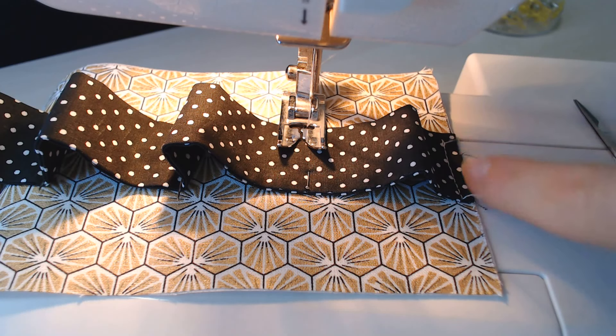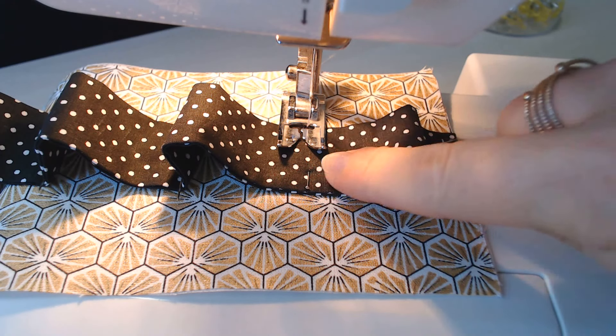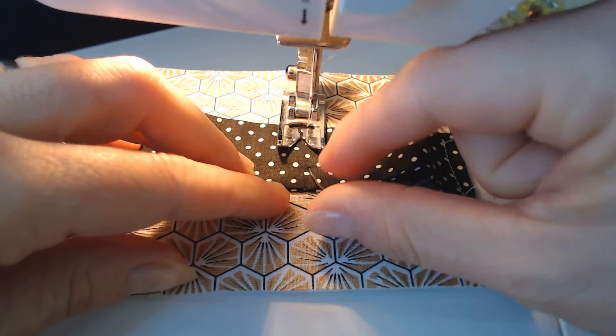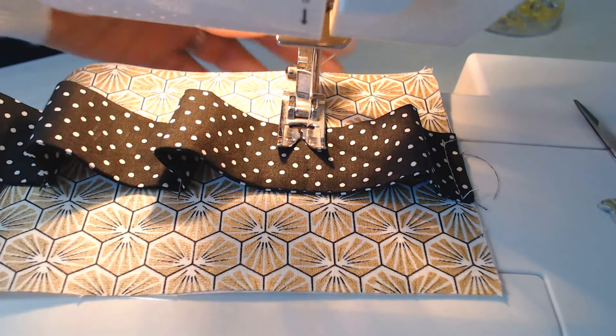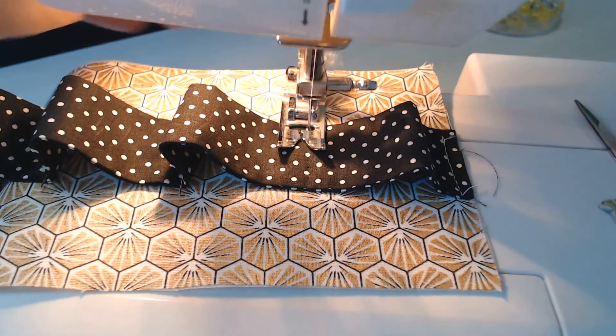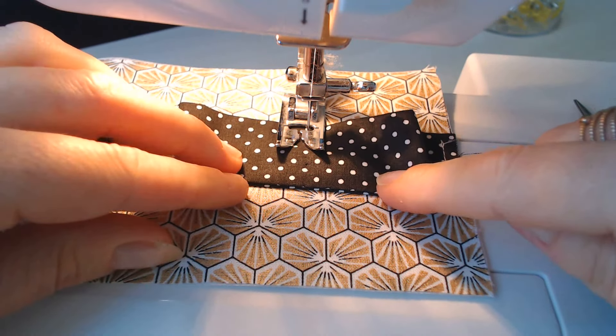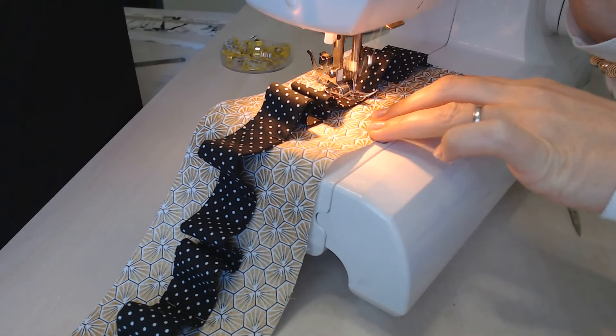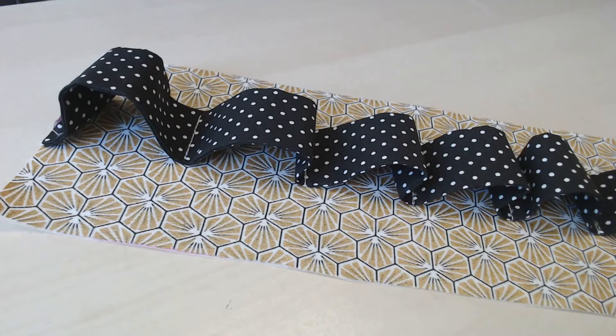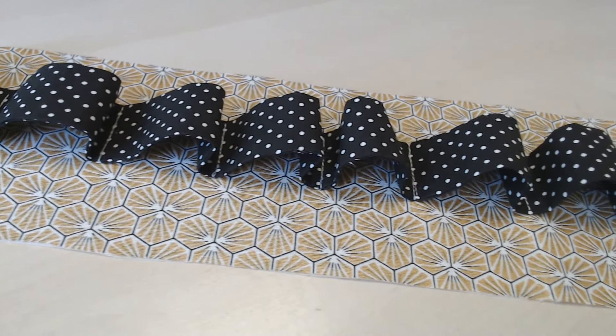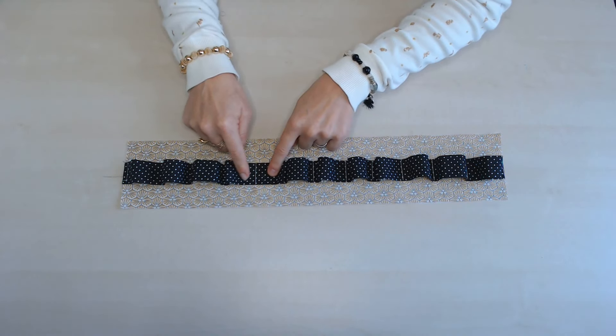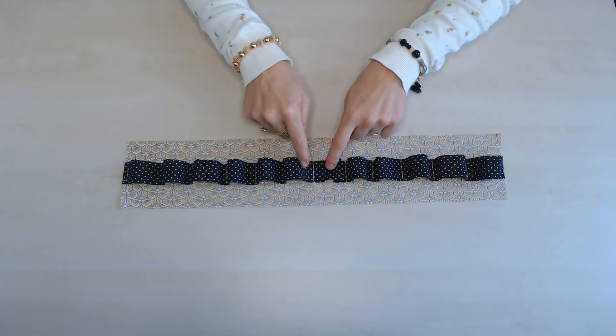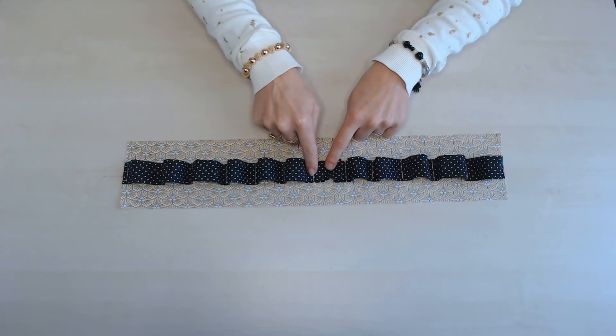J'ai d'abord piqué les extrémités pour les maintenir et maintenant je vais piquer à l'endroit de l'épingle. Pour que ce soit résistant avec le temps, il faut à chaque fois piquer deux fois. Donc, je fais un point en avant et une marche arrière complète.